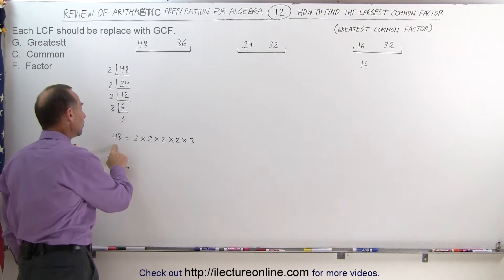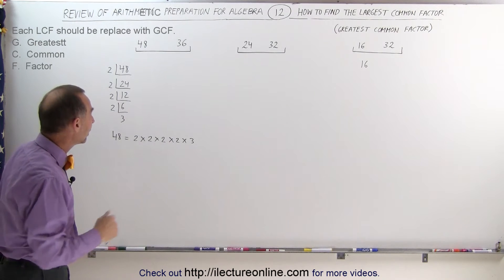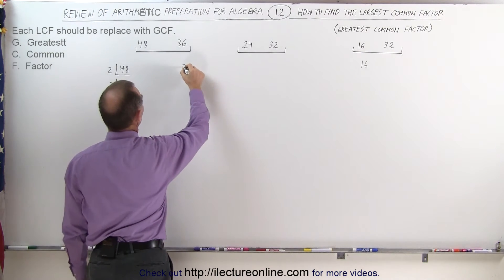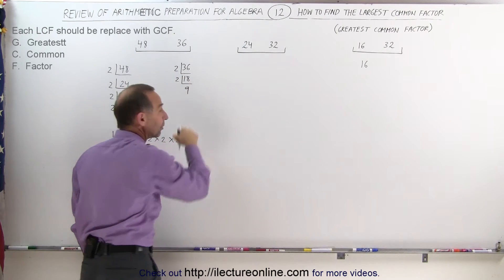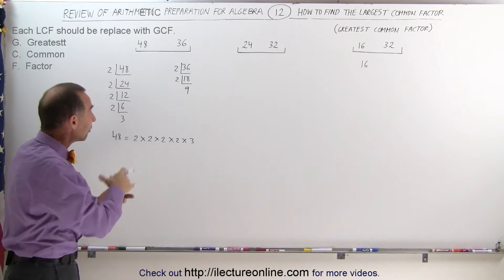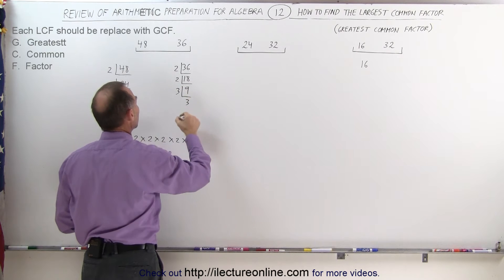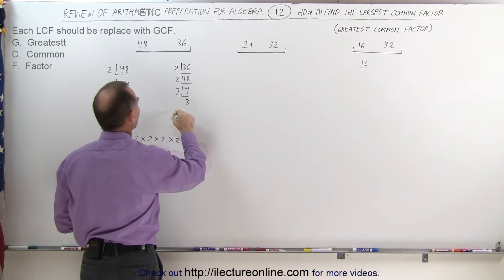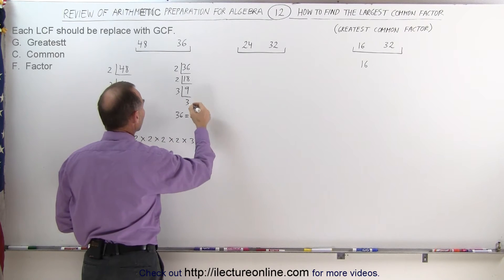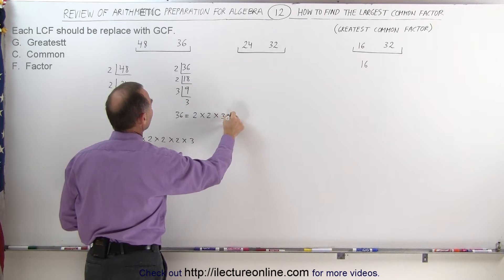We can do the same with 36. 36 divided by 2 is 18. 18 divided by 2 is 9. Now 9 is no longer even, so we go to the next prime number, which is 3. 9 divided by 3 gives 3, which means 36 can be written as the product of 2 times 2 times 3 times 3.